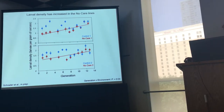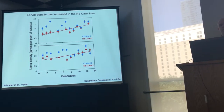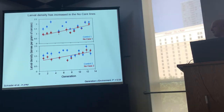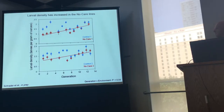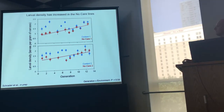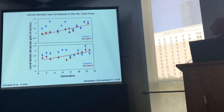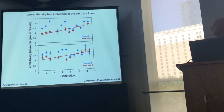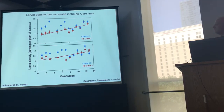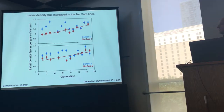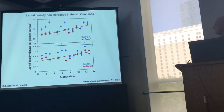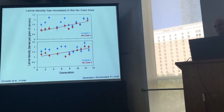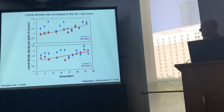The second thing we looked at was larval density — the number of larvae per gram of carcass — a measure of how well larvae are able to survive and use the carcass the parents prepared. The control lines in blue bounce around considerably, with no directional change over time. In contrast, in both replicates of the experiment, larval density has increased in the no-care lines, suggesting that brood size is getting larger as these populations adapt to the absence of post-hatching parental care.